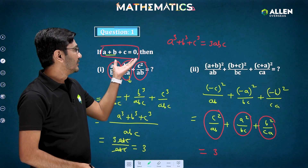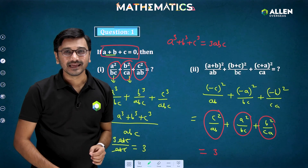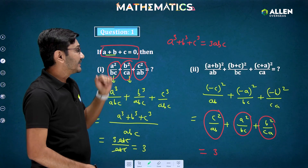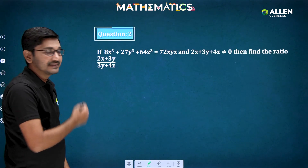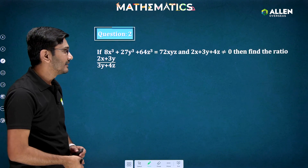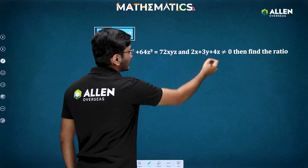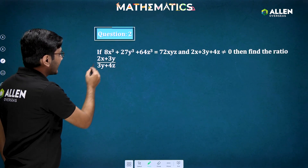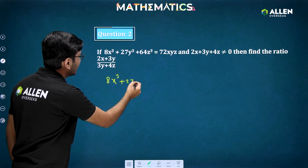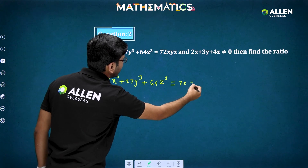So, whenever the sum of three numbers is zero, we get a³ + b³ + c³ = 3abc. This equation is also satisfied if the three numbers are equal, even if their sum is not zero. Now let's see another question: if 8x³ + 27y³ + 64z³ = 72xyz and 2x + 3y + 4z ≠ 0, find the ratio (2x + 3y) / (3y + 4z).